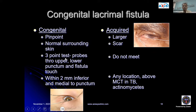When we do a three-point test — passing three probes, one through the upper, one through the lower punctum, and one through the fistula — they will touch. In contrast, acquired fistulas are much larger with a scar around them, and the three probes are unlikely to meet. The location of an acquired fistula is anywhere, usually above the medial canthal tendon in tuberculosis and actinomyces.